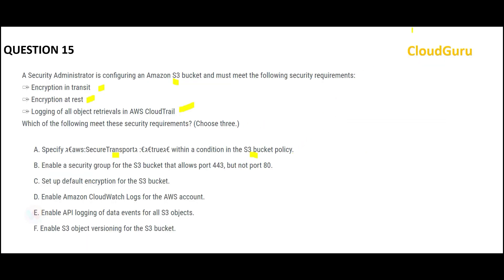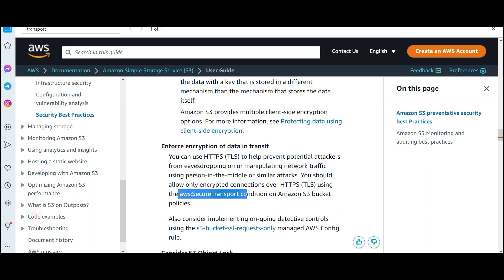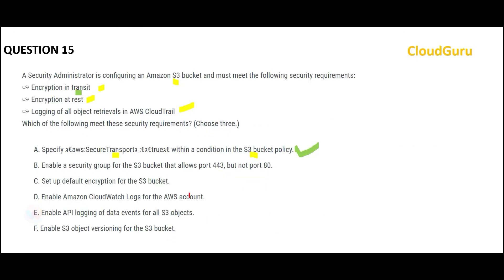Option A looks correct — it ensures encryption in transit using TLS protocols via the Secure Transport condition on S3 buckets, so that requirement is addressed. Option B says enable a security group — a security group prevents unauthorized access like a security guard, but it will not help you encrypt data, so that is wrong.